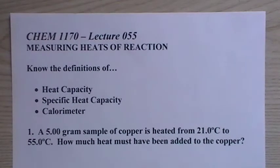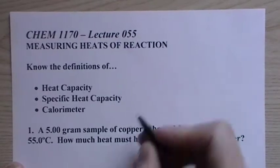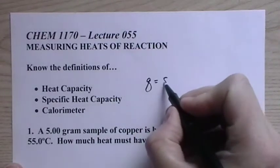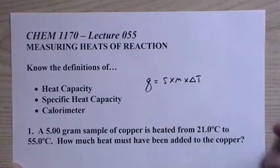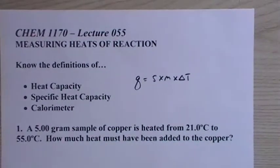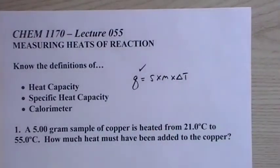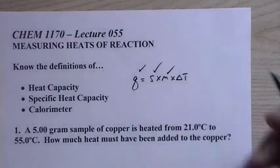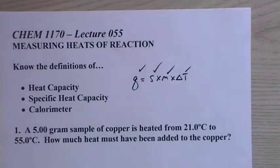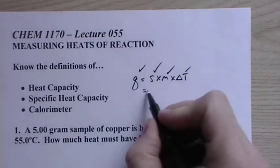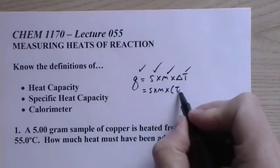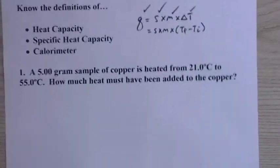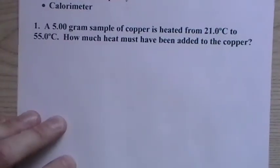All right, Lecture 55, Measuring Heats of Reaction. We're going to be using an equation: Q equals S times M times delta T. This is the heat that's given off or absorbed from a system. S is the specific heat, M is the mass, and delta T is the change in temperature. We can expand that out to T final minus T initial. So this is what we'll be using to determine the heat that's emitted or absorbed from a system.